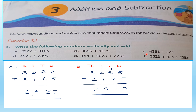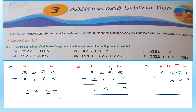Now let's go to question C. We have two numbers again. Let's write the places: ones, tens, hundreds, and thousands. The number is 4,351 plus 323. Be careful — 300 must be put in the hundreds place. Let's add: 1 plus 3 is 4, 5 plus 2 is 7, 3 plus 3 is 6, and then we have 4. The answer is 4,674.